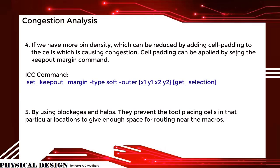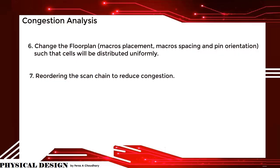By using blockages and halos, the tool is prevented from placing cells in that particular location, giving enough space for routing near the macros. Changing the floorplan — that is, macro placement, macro spacing, and pin orientation — such that cells are distributed uniformly, and reordering the scan chain to reduce congestion, can also be done.